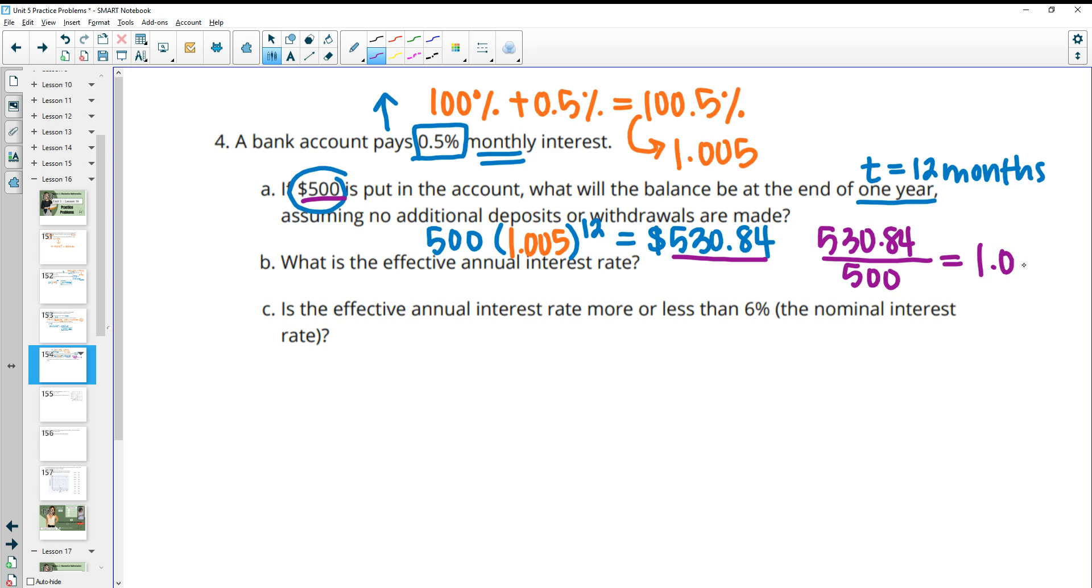And when we do this, we get 1.06168. So there's our growth factor, which is like this, right? So we're trying to figure out this percent. So if we subtract off the 1, we get 0.06168. And then that as a percent is 6.168%. So 6.17% if you wanted to round.